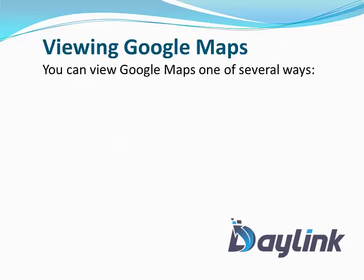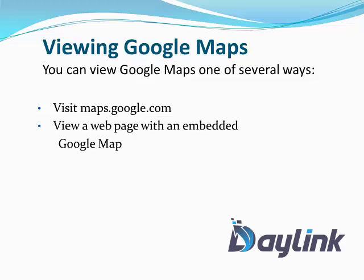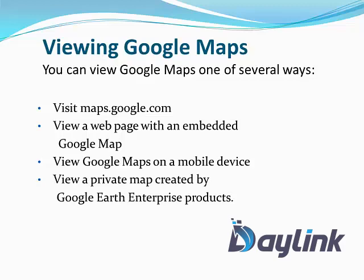Viewing Google Maps. You can view Google Maps in one of several ways. Visit maps.google.com is one way. Viewing a web page with an embedded Google Map is another way, where different websites embed Google Maps to make them more interactive. You can also view Google Maps on a mobile device, which is very popular nowadays, or view a Google private map created by Google Earth Enterprise products.